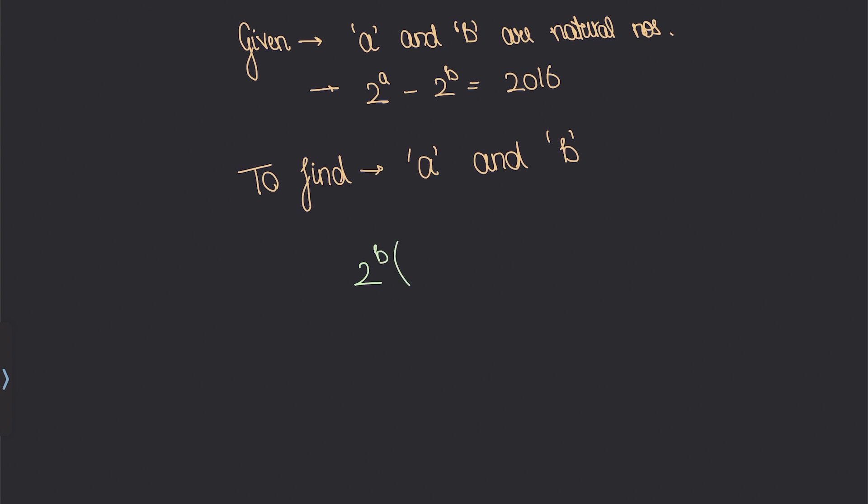When you take 2^b common, you are left with 2^b times (2^a / 2^b - 1) = 2016, or it can be written as 2^b times (2^(a-b) - 1) = 2016.